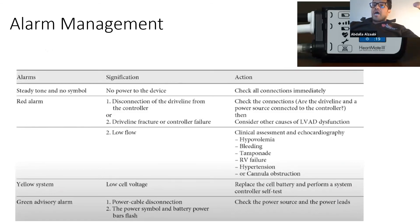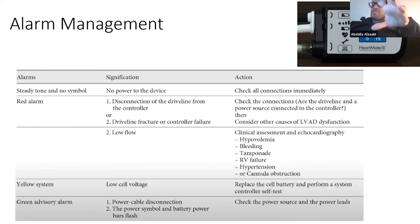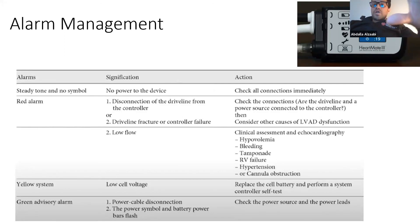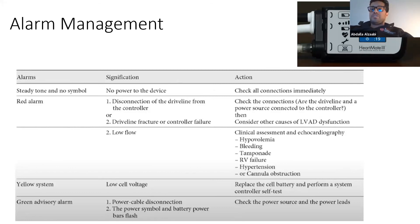If there is an alarm from the system, check the connections and the battery. Each LVAD machine has specific alarms — you can look these up in the machine booklet or online. Here is a table of some alarms you can see with the HeartMate 2. However, if the patient is stable, these alarms are usually managed by the LVAD team, so you don't need to worry about them too much.